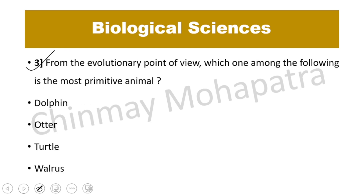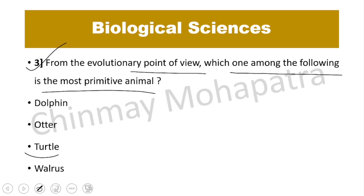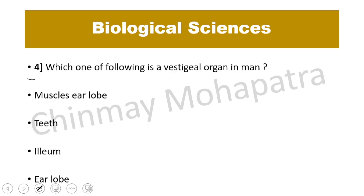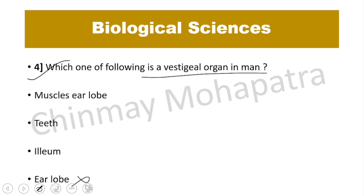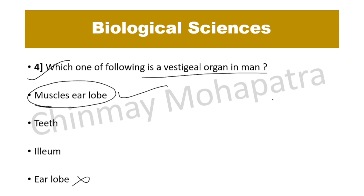Question number 3. From the evolutionary point of view, which one among the following is the most primitive animal? The right answer is Toad. Question number 4. Which one of the following is a vestigial organ in man? The right answer is muscles of the ear lobe. Option A is correct.